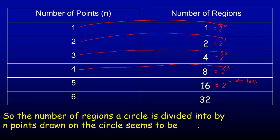So we might hypothesize the next one is 32, because that's two to the fifth — five being one less than six. It looks like the number of regions a circle is divided into by n points seems to be two to the power of n minus one. So 32 would be two to the fifth, since the number of points is six, and six minus one gives us the exponent five.